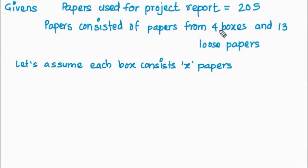So we have 4 boxes. That means in 4 boxes we will have 4x papers plus 13 loose papers and that is total equal to 205.